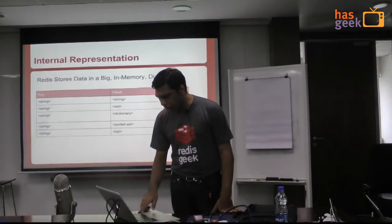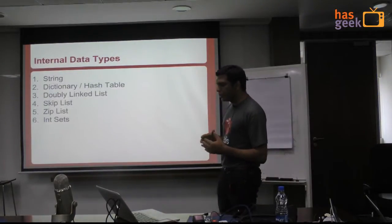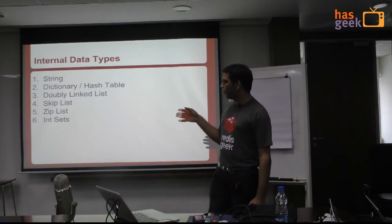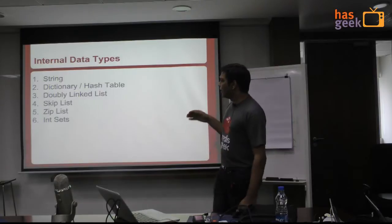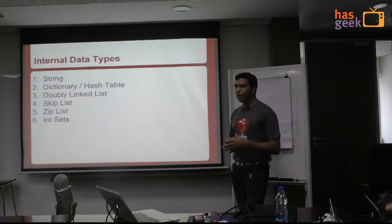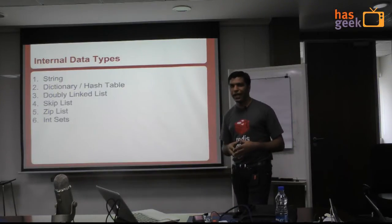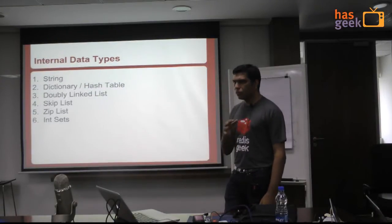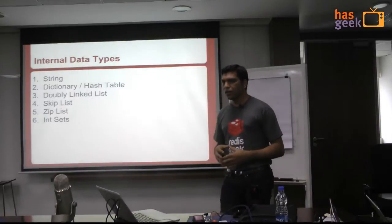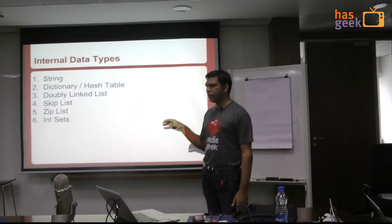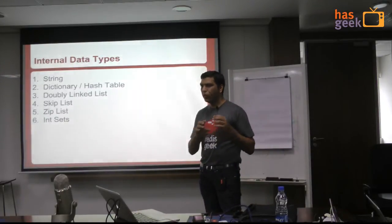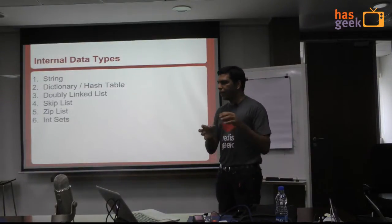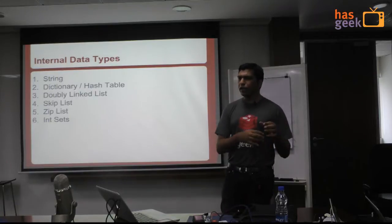Moving on from here, the internal data types that Redis has — there are six or seven, with one deprecated — these are the data types Redis uses internally to store all data in memory. The objective is just to understand a little bit of how data is laid out in memory, so that when you're storing a piece of data, how does it store and what can you do to optimize it?